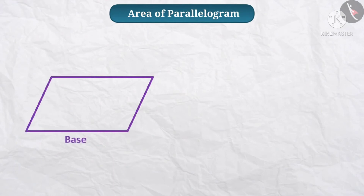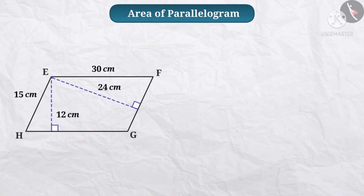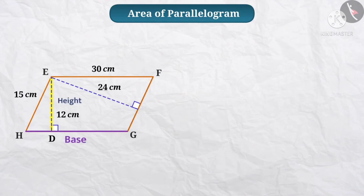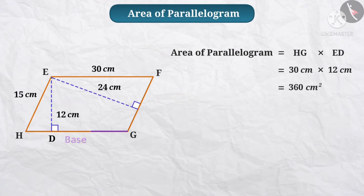Next, see the parallelogram — base and height. The height is drawn from one vertex to the opposite side. Now, you see the parallelogram EFGH. From one vertex, we draw the height. DE is one height, and the base is GH. So, area of the parallelogram is equal to base HG into height ED, which is 30 into 12 — equal to 360 centimetres squared.